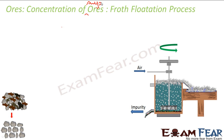This method is called the froth flotation process — we studied it in the previous chapter on surface chemistry. This method is used to remove gangue particles from sulfide ores. Please note: this is used only for sulfide ores.